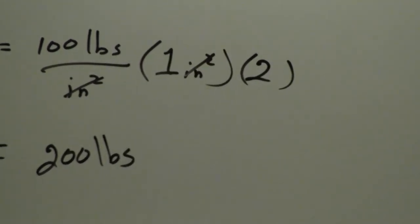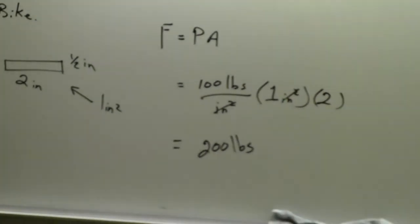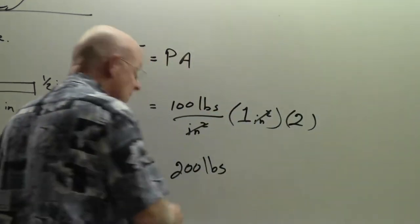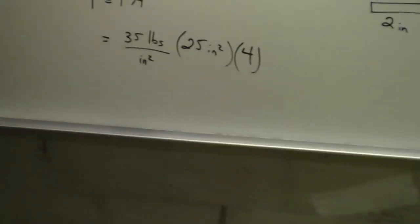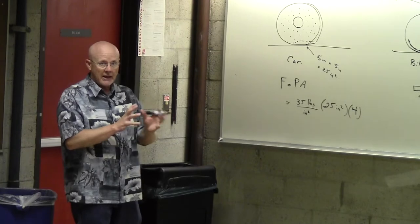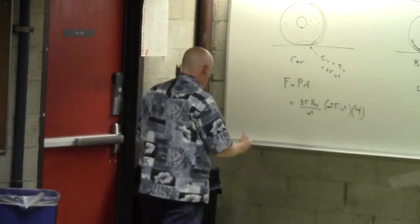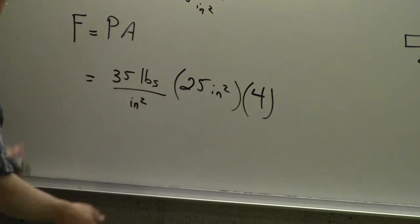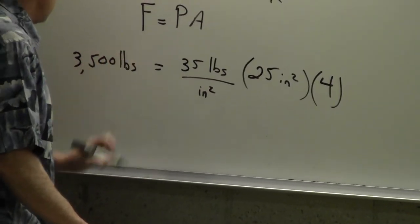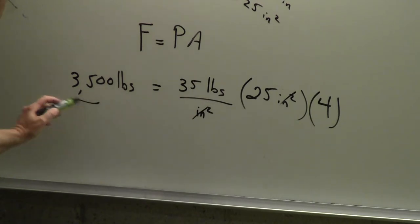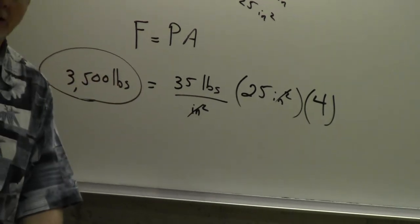That makes sense: by the time you weigh me and my bike, we're about 200 pounds. For my car: 25 square inches times 4 tires is 100 square inches, times 35 PSI is 3,500 pounds. Sure enough, there's a lot more force holding up my car — not more pressure, more force. Did you catch that? Pressure is not the total force — it's just how much force you get per unit area.